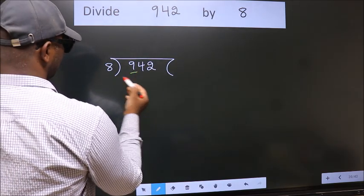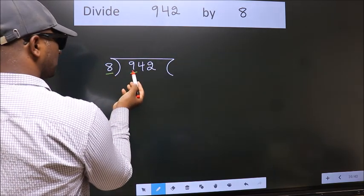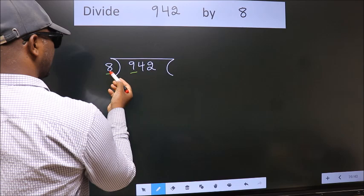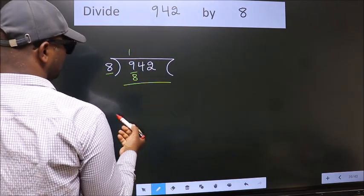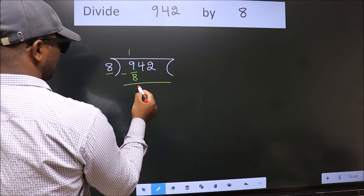Here we have 9. Here 8. A number close to 9 in 8 table is 8 once 8. Now we should subtract. We get 1.